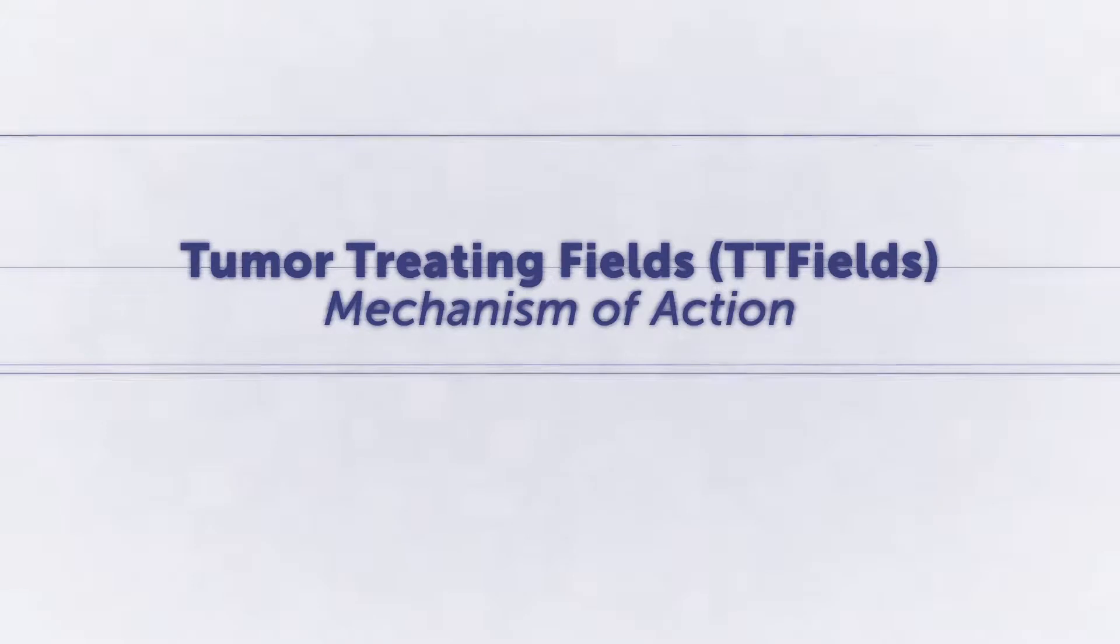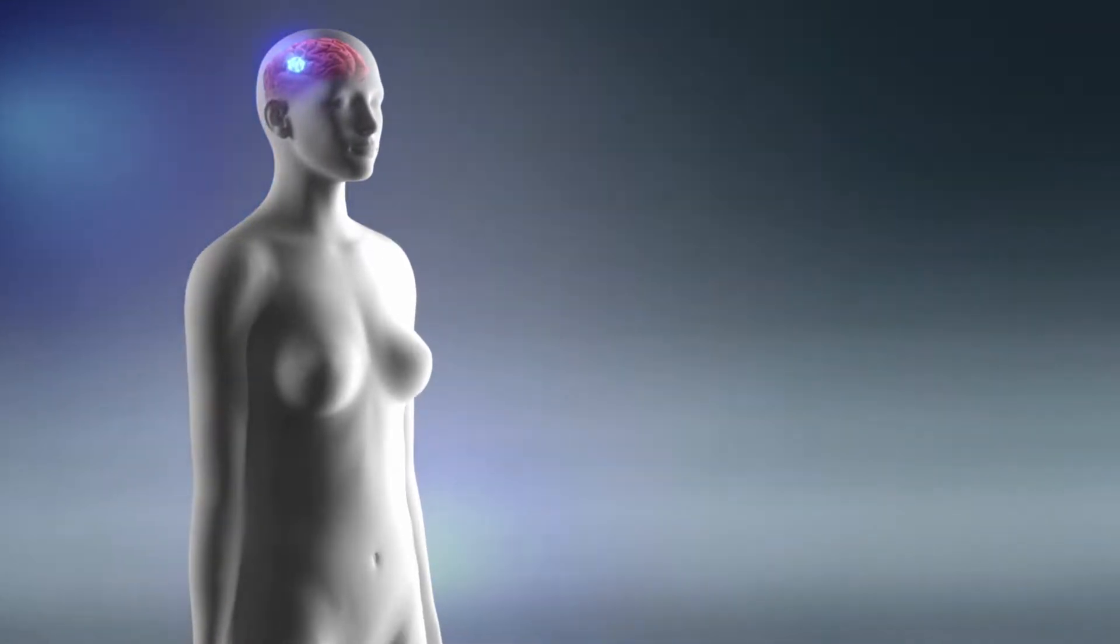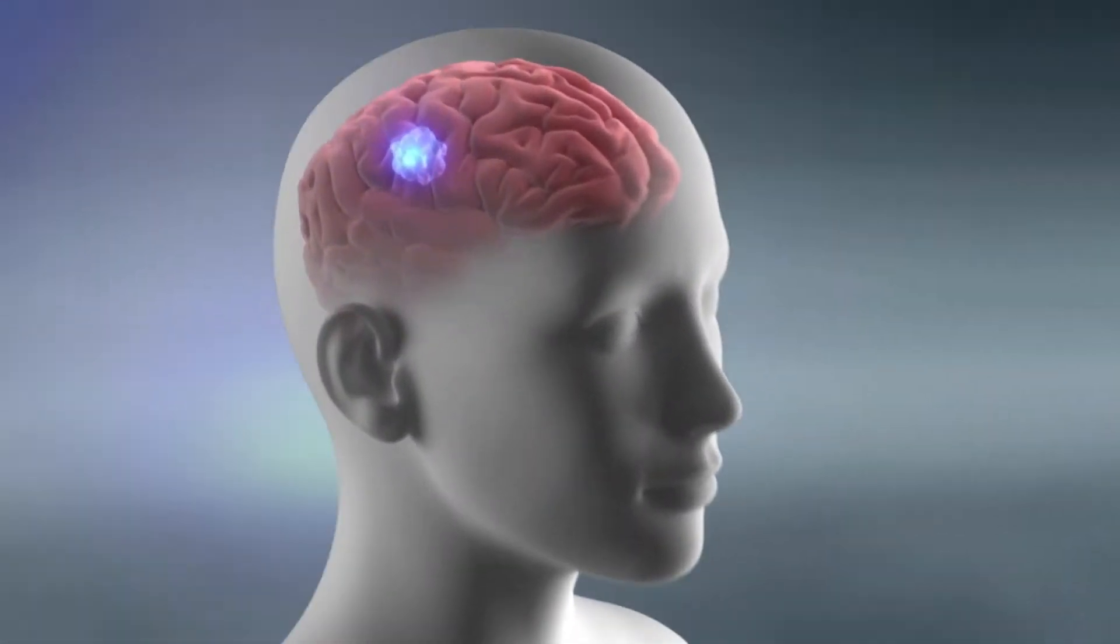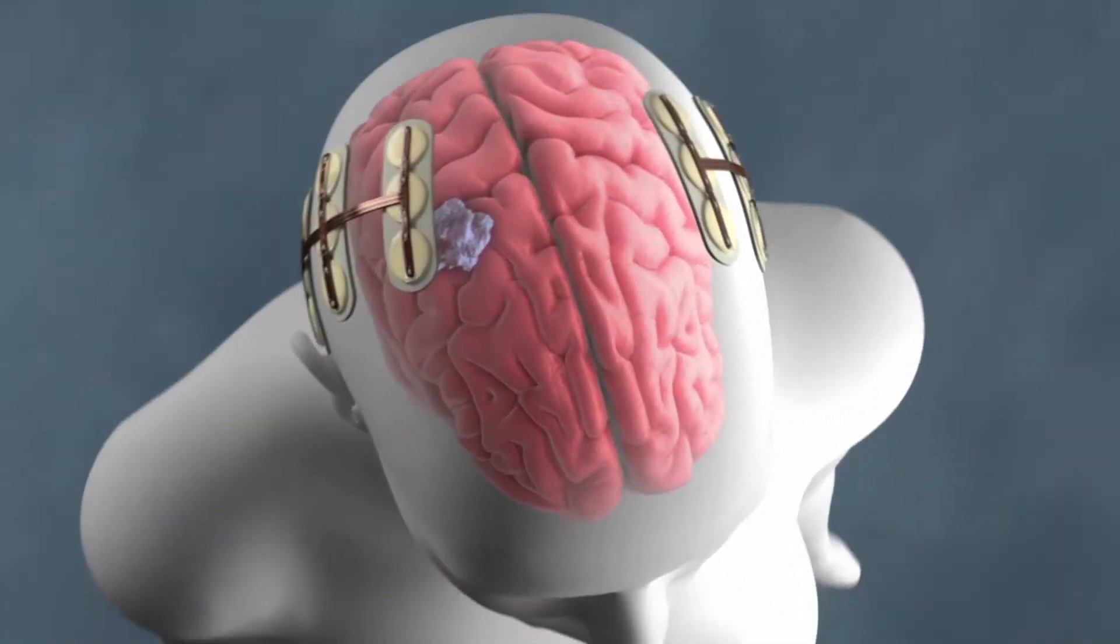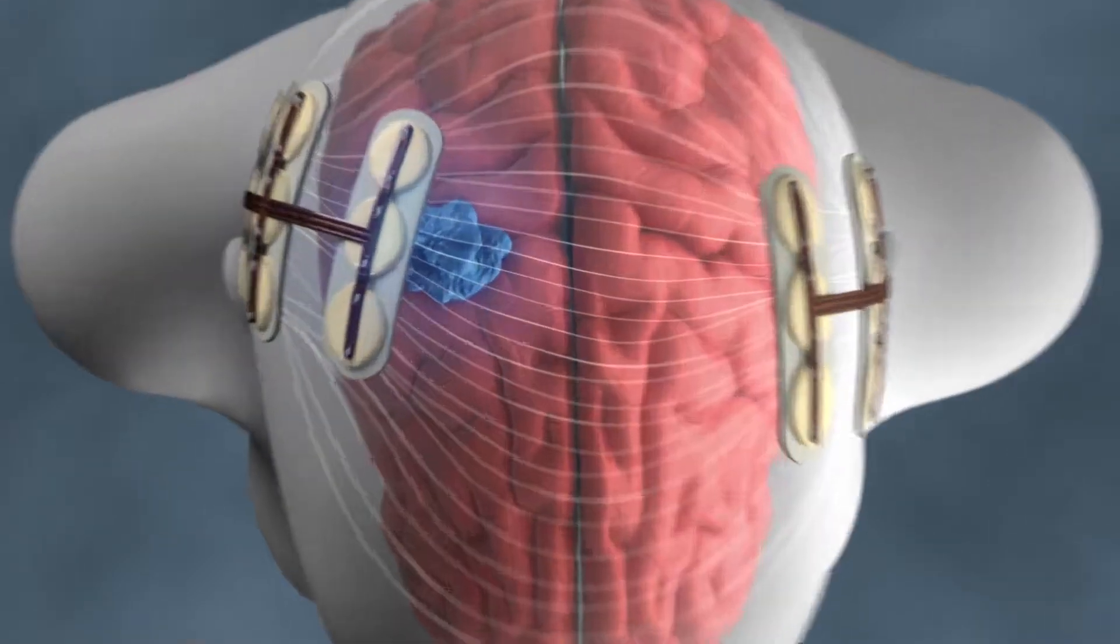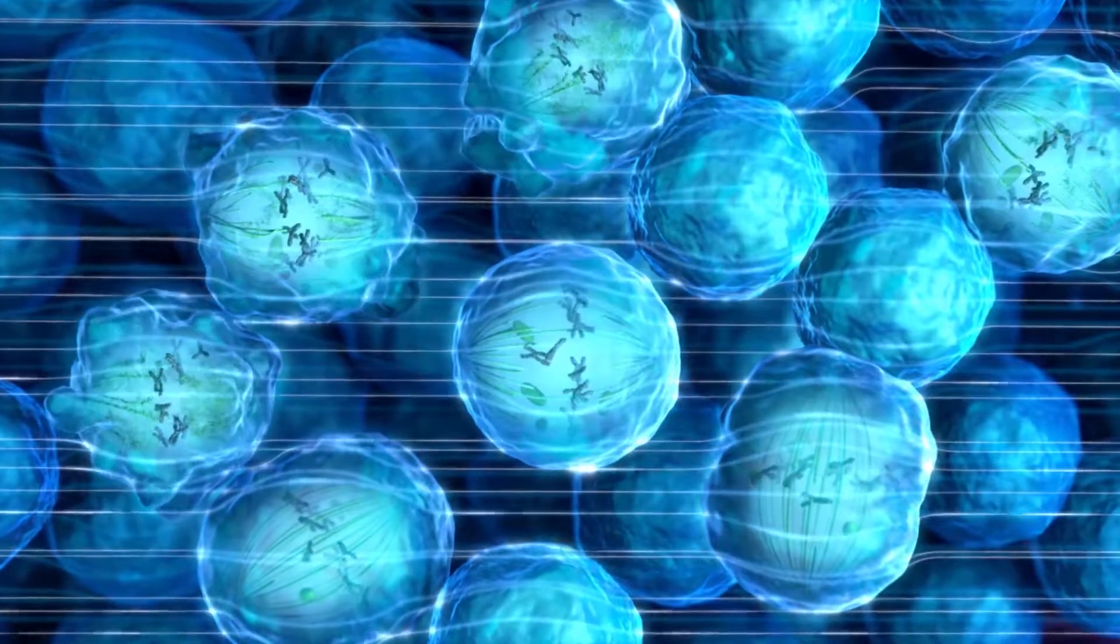Tumor treating fields, or TT fields, are low intensity alternating electric fields within the intermediate frequency range. This non-invasive treatment targets solid tumors. TT fields are generated via pairs of transducer arrays placed directly on the skin surface. TT fields disrupt cell division through physical interactions with key molecules during mitosis.